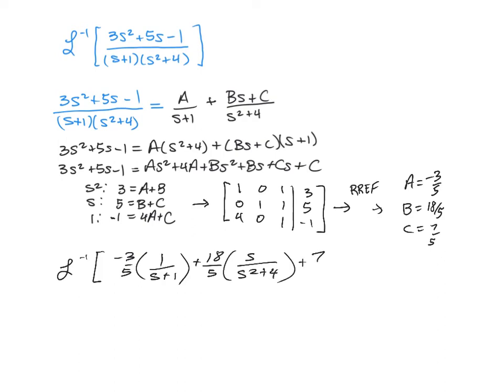And then we're going to have our 7 fifths, which is our C, and that's going to be 1 over s squared plus 4.